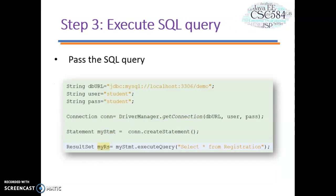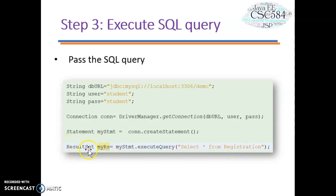Step three: execute the SQL query. The executeQuery() method of the Statement interface is used to execute queries to the database. This method returns a ResultSet object that can be used to get all records of a table. Using myStatement, we call the executeQuery() method with a SELECT statement from the table 'registration', and the result is held in a ResultSet object.